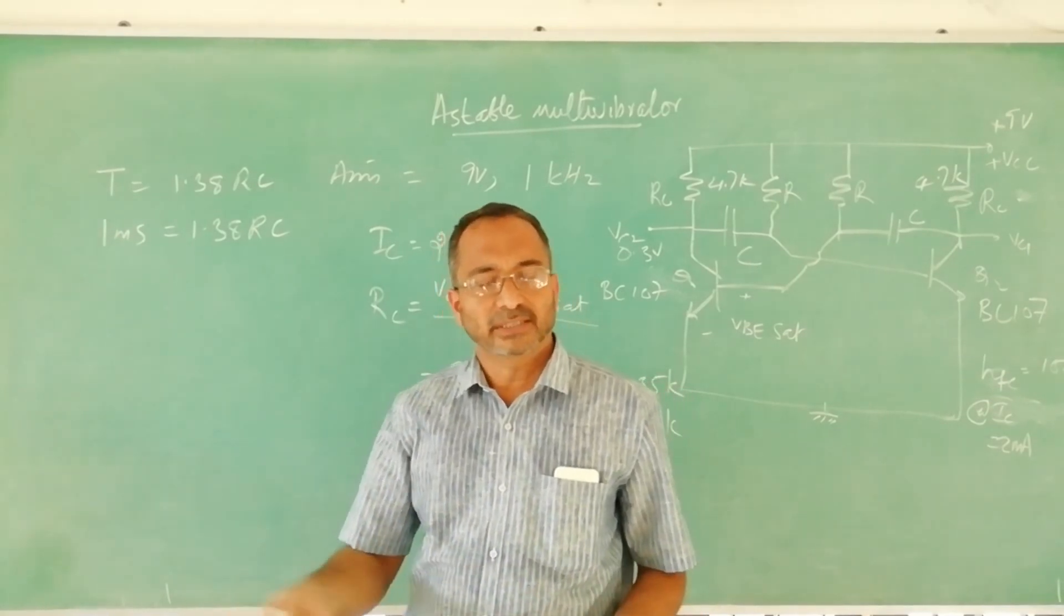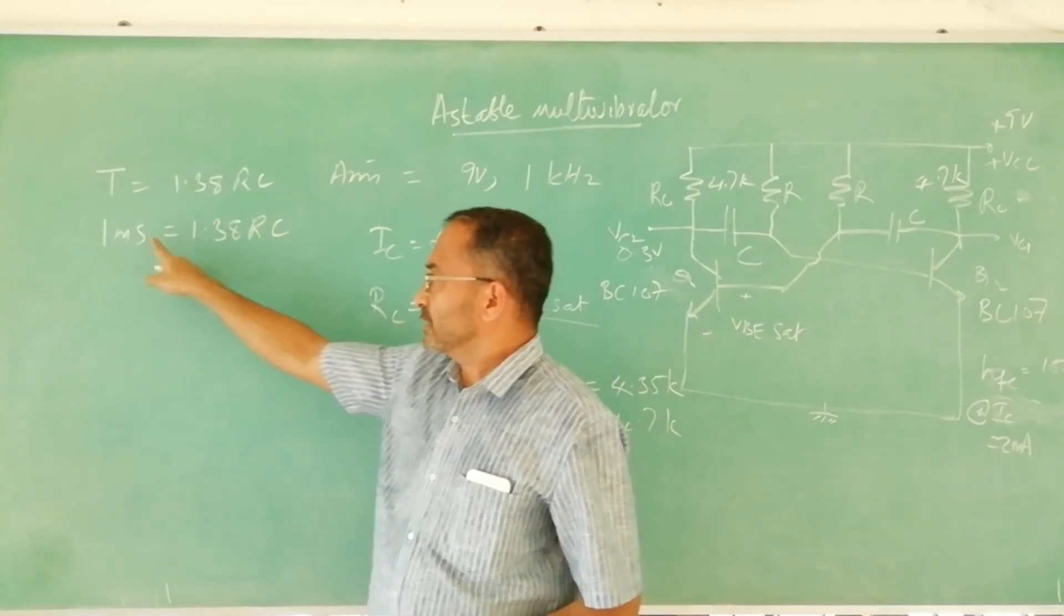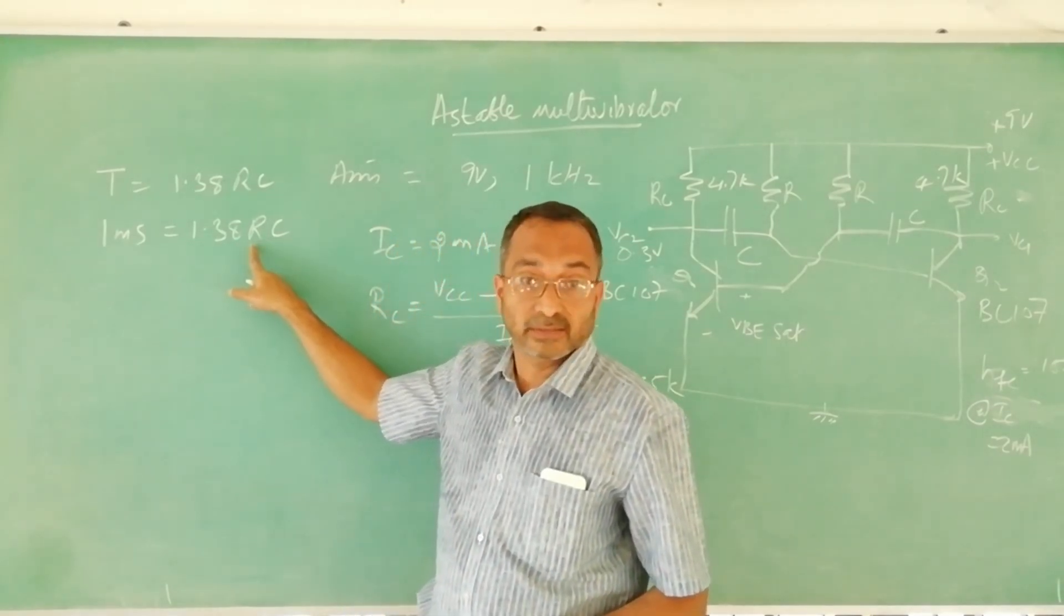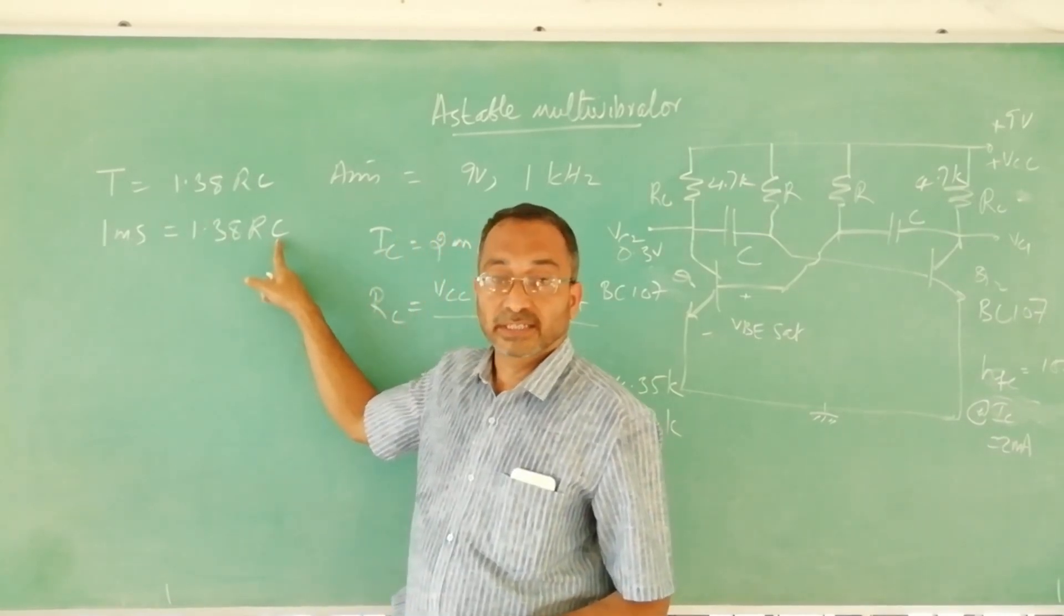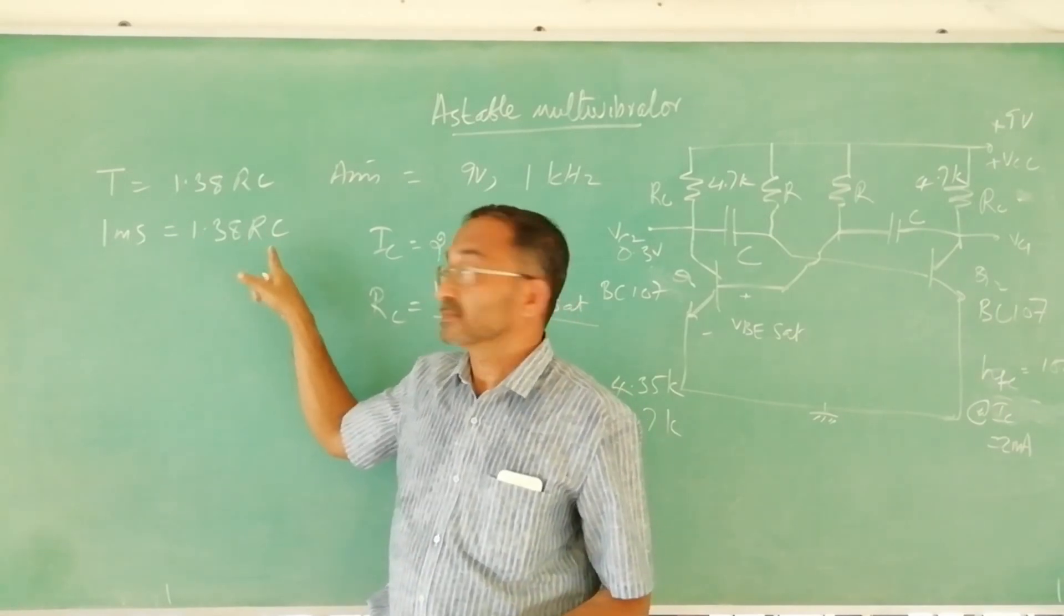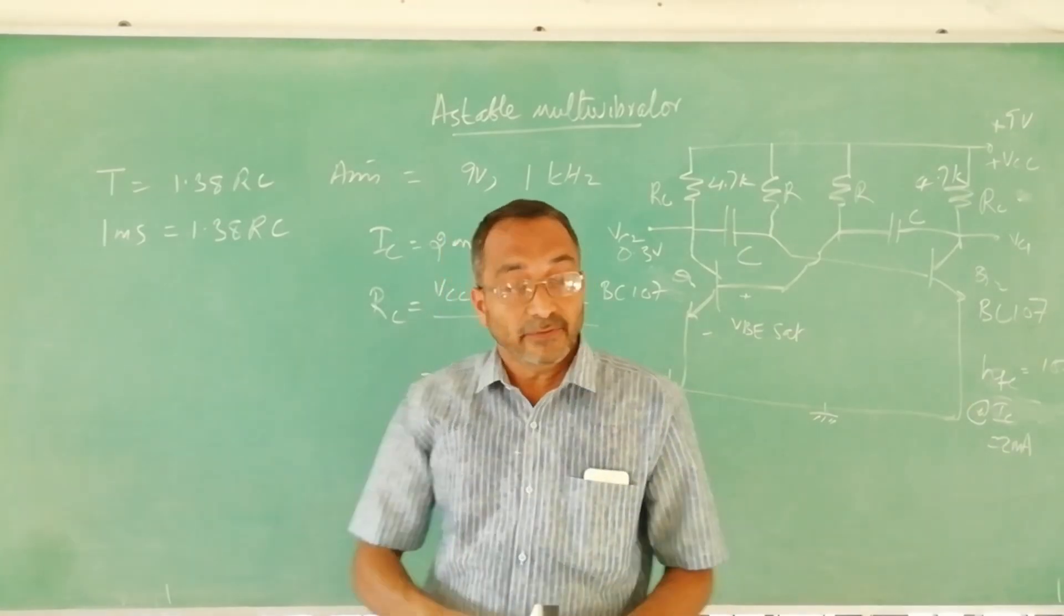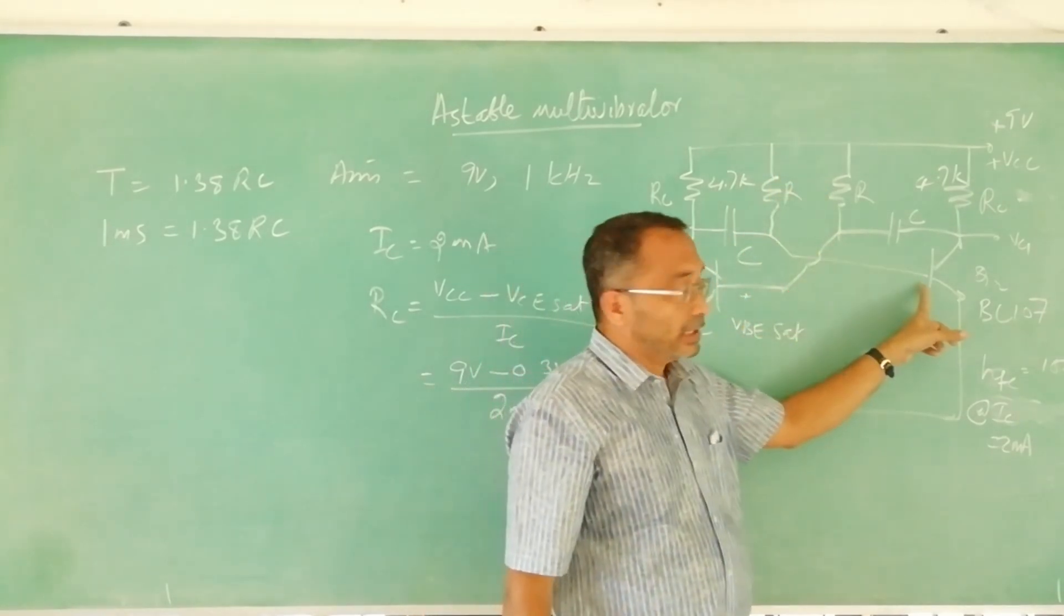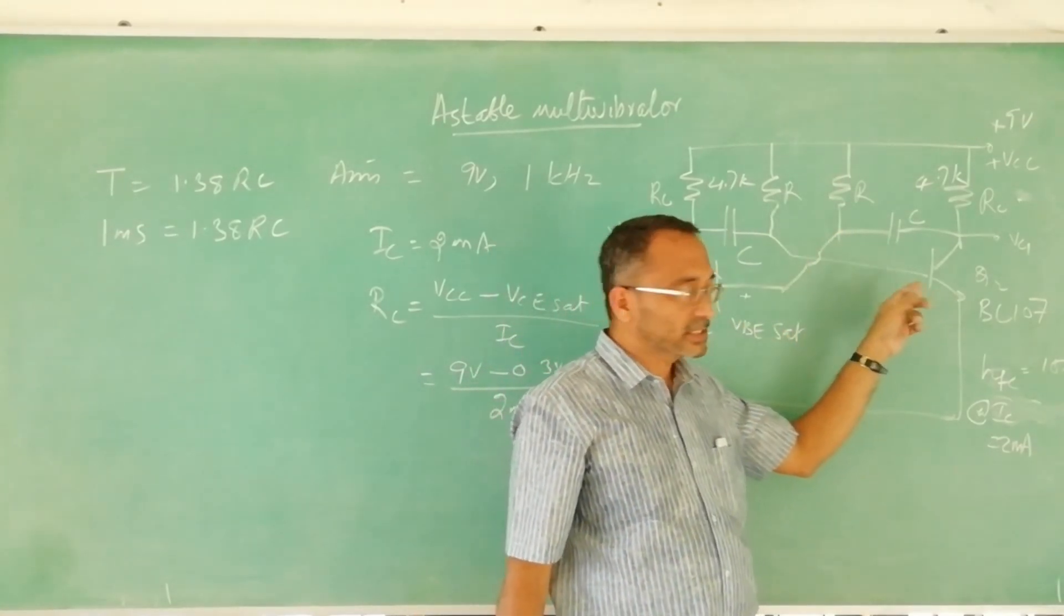Because if you select C first and if time period happen to be very long then you will get a very high value for R. For example if you need one second here and if you select a few microfarad here then you will find very high value for R. In that case if R value is very high, this current flowing through this and flowing into this transistor will be very less.